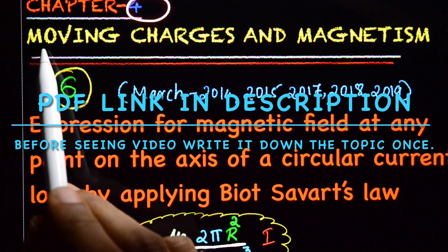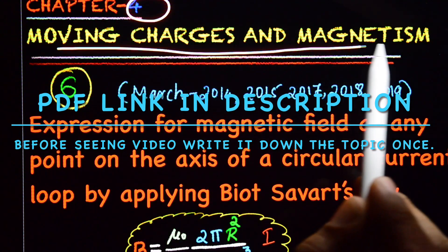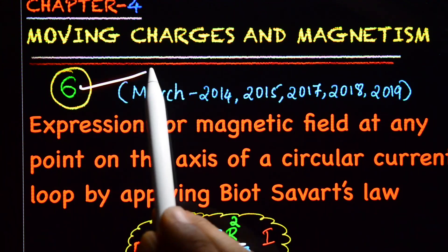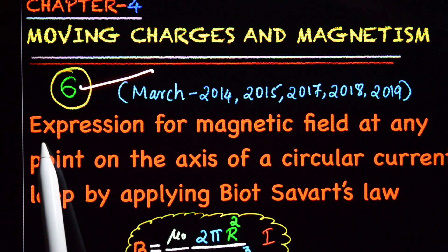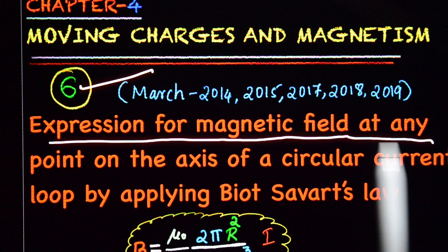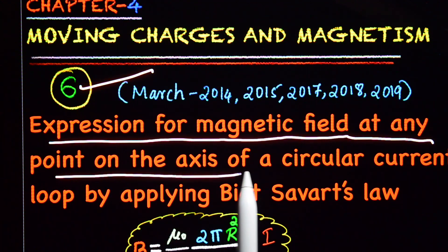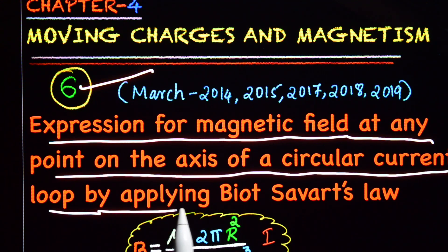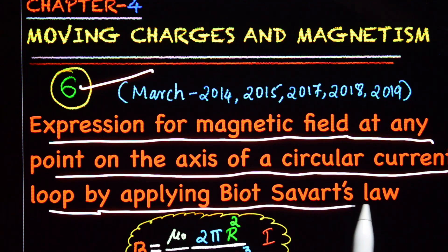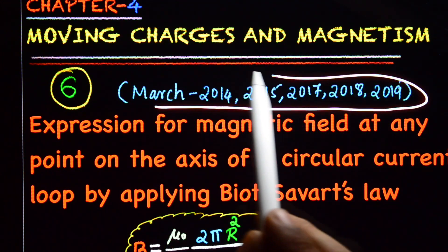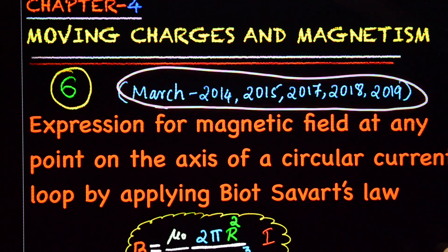Chapter 4: Moving Charges and Magnetism. Sixth topic: Expression for Magnetic Field at any point on the axis of a circular current loop by applying Biot-Savart's Law. This is one of the important topics.